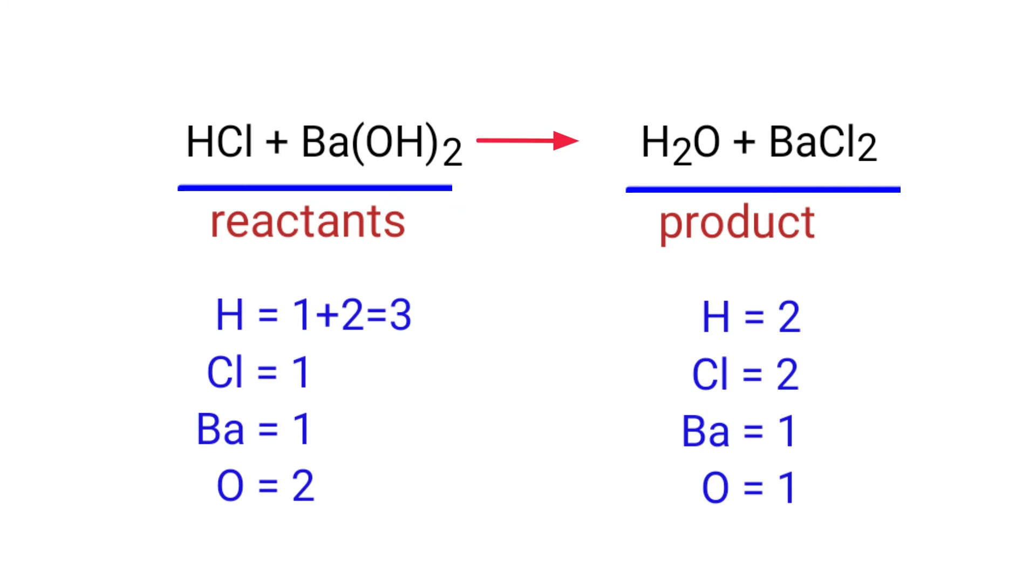In this equation, we need to balance the chlorine atoms first. To do this, we need to put a coefficient of 2 in front of HCl. The chlorine atoms are balanced.